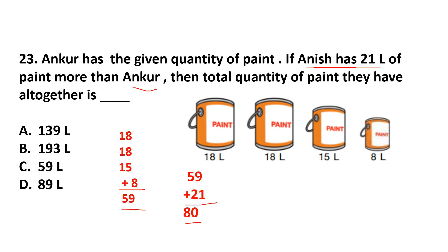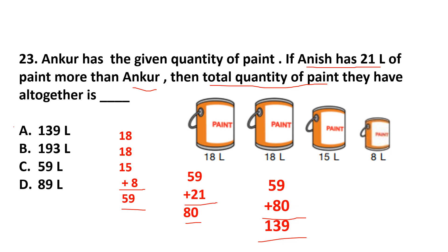Anish has 80 liters and Ankur has 59 liters. Total quantity of paint they have altogether: 80 plus 59 is 139 liters. They both have 139 liters of paint altogether. The answer is option A.